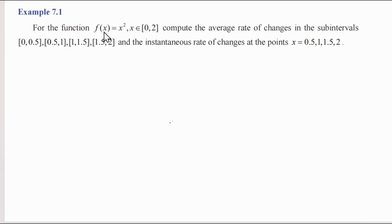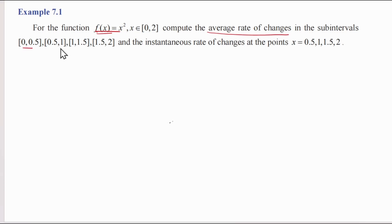We have the function f(x) = x². What do we call average rate of change? We call average rate of change in the intervals [0, 0.5], [0.5, 1], [1, 1.5], [1.5, 2] — in these four intervals we compute the average rate of change.